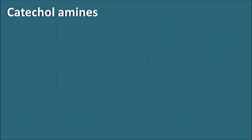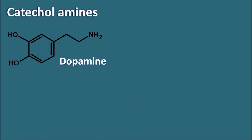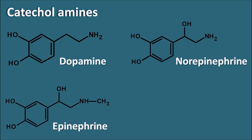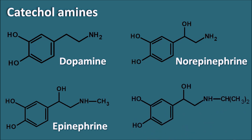The catecholamines include: dopamine (the simplest), norepinephrine (which has an OH group at the beta position), epinephrine (which has a methyl group on the amine), and isoproterenol — also called isoprinaline — which has an isopropyl group on the amine side chain. Isoproterenol is a synthetic catecholamine, whereas dopamine, norepinephrine, and epinephrine are natural catecholamines.